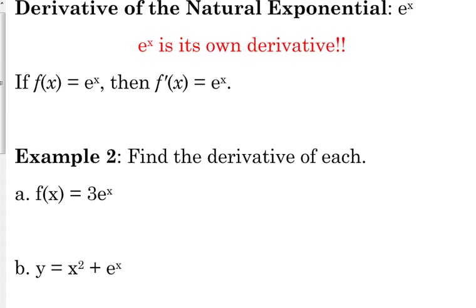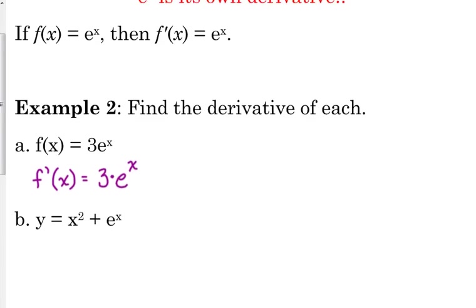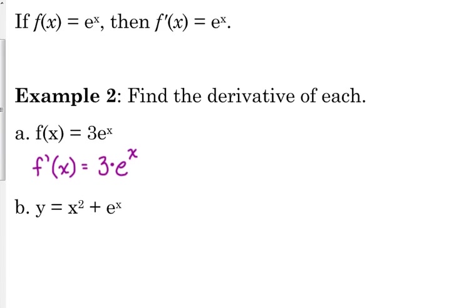For example, if f of x is 3e to the x, the 3 is just a constant multiple. So the derivative of 3e to the x is that constant times the derivative of the function. The derivative of e to the x is e to the x, so the derivative is the exact same thing as the original function. We can also combine it with a polynomial: if our function is x squared plus e to the x, then dy over dx — the derivative of x squared is 2x and the derivative of e to the x is e to the x — so the derivative is 2x plus e to the x.